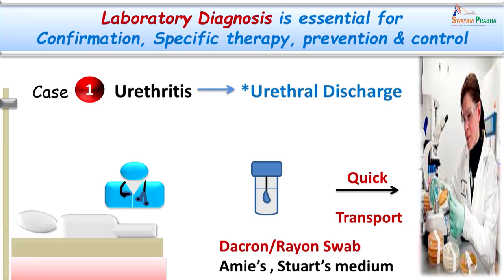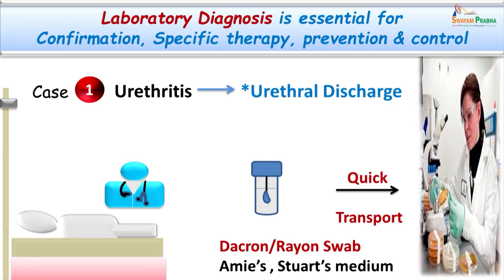In case 1 we collected the urethral discharge on the tip of a swab. The swab should be very carefully chosen because gonococci are highly delicate and sensitive organisms. We cannot collect on cotton material because fatty acids present in cotton can inhibit their survival. Hence, Dacron or Rayon material should be chosen. Swabs should be immediately transported to the laboratory and if any delay is expected, the swab can be put into a transport medium such as EMIS, tryptose soy broth, or Stuart medium.